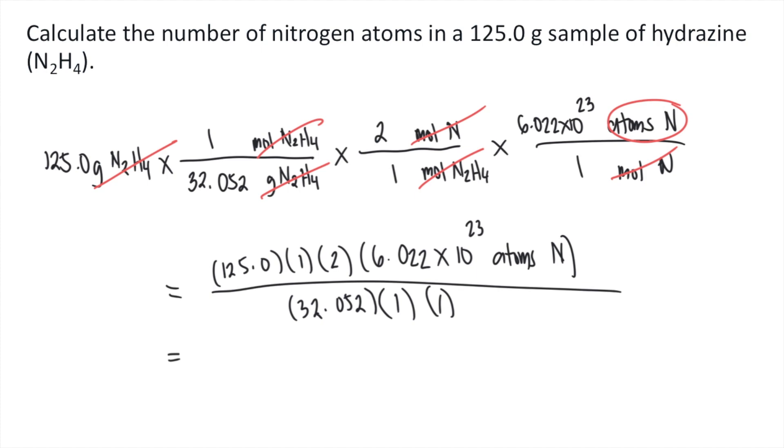you will get approximately 4.697 times 10 raised to the 24th power atoms of nitrogen. And this is the answer to the question.